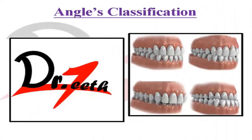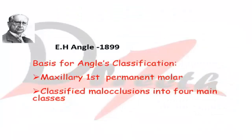Hello friends, welcome to Dr. Teeth. Today we'll be studying Angle's classification. Angle's classification was given by Edward Hartley Angle in 1899. Edward Hartley Angle was interested in prosthodontics and was teaching prosthodontics in Minnesota and Pennsylvania. While studying the occlusion of dentures, he came up with the idea of the classification of malocclusion, which can be applied to the permanent teeth.